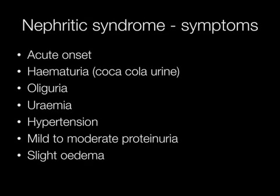The onset of nephritic syndrome is acute with hematuria, oliguria, uremia, hypertension, mild to moderate proteinuria and slight edema.